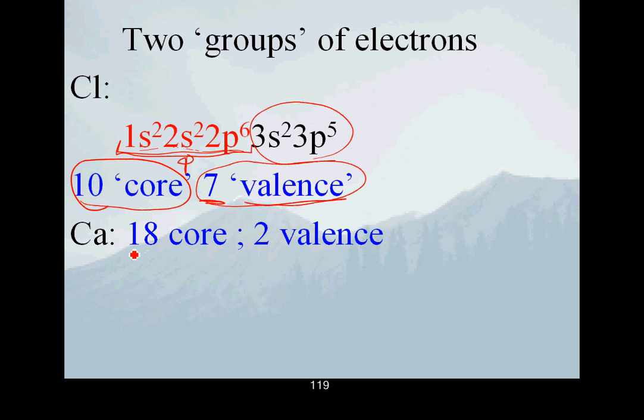Calcium has 18 core electrons, so the previous noble gas has 18 electrons - those 18 never go away. And calcium has 2 valence electrons. We know this - calcium's common oxidation state is plus 2.